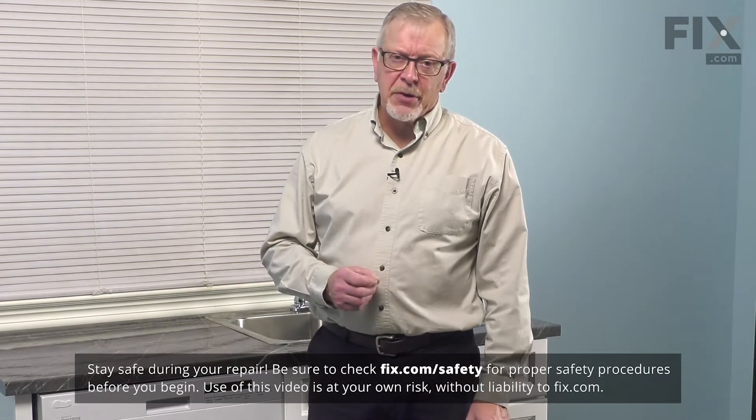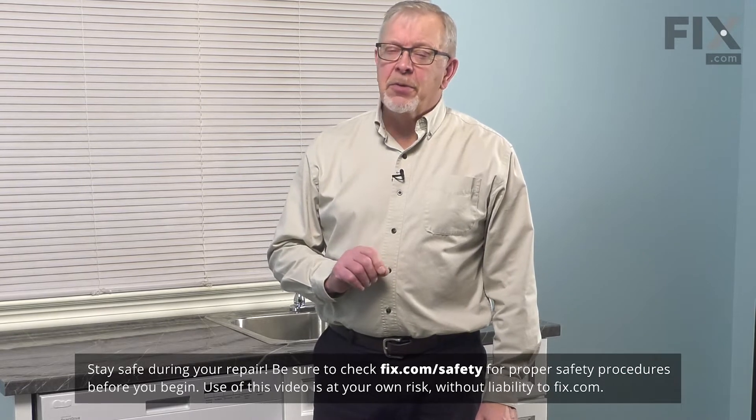Before we begin this repair, since we will be working near some electrical circuits, the first thing we'll need to do is disconnect power to your dishwasher. If your dishwasher has a cord on it, simply unplug it. If not, locate the electrical panel and turn off the appropriate breaker or remove the appropriate fuse. Once we've done that, we can start our repair.